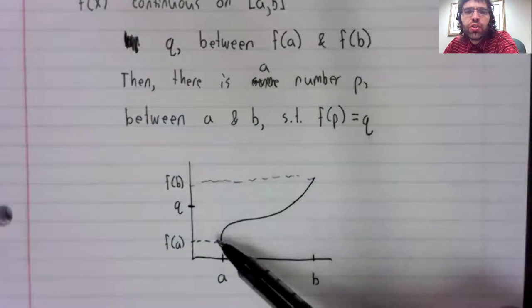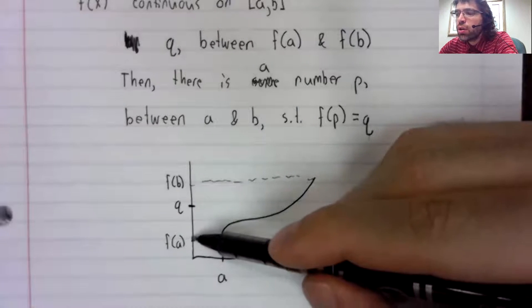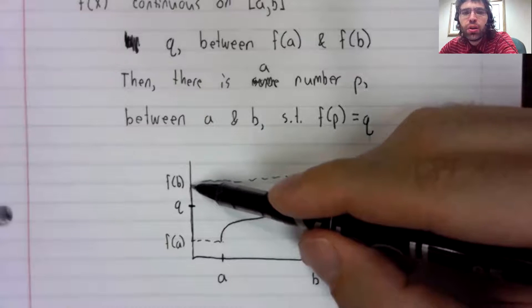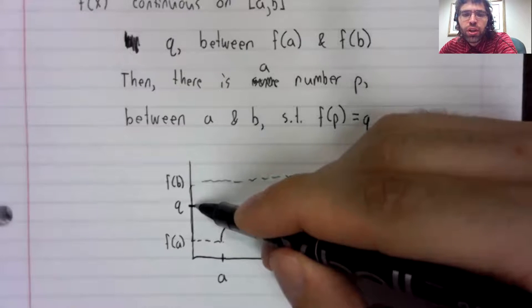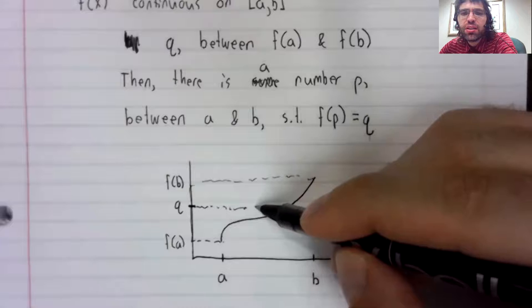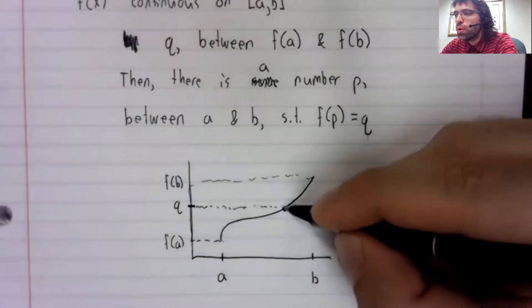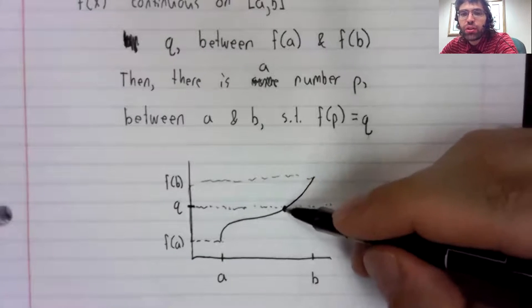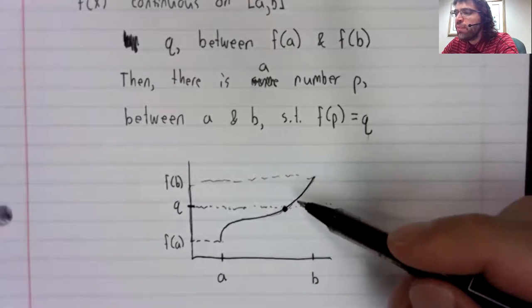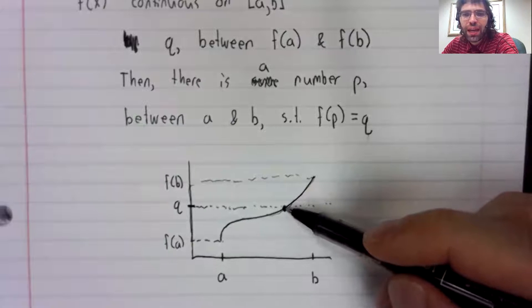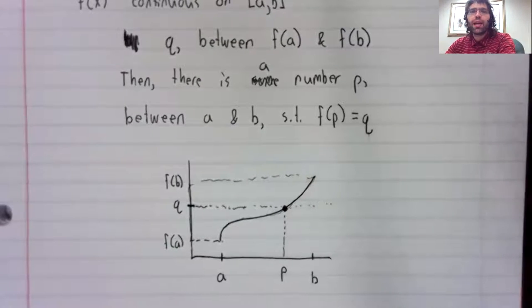Well, because continuous functions can't jump around, if we're going to go from here up to here, at some point we have to pass this value. So there has to be some point in the interval where we pass q. And there is such a value here. On the way from f of a up to f of b, we pass this intermediate value, and that happens at p.